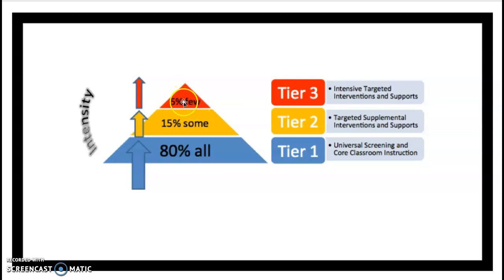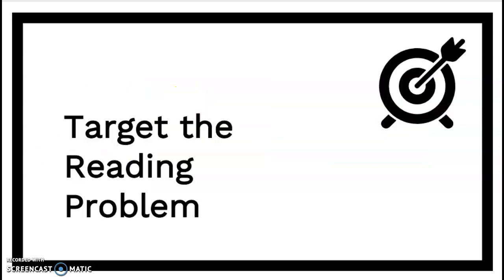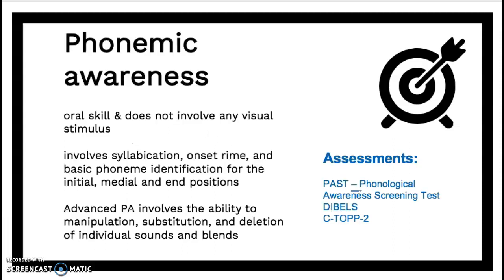So how do we address that? That's what we're going to be talking about today — targeting the reading problem. So let's figure out which area we need to target. If it's phonemic awareness: phonemic awareness is that oral skill that does not involve any visual stimuli. You can actually do it in the dark.